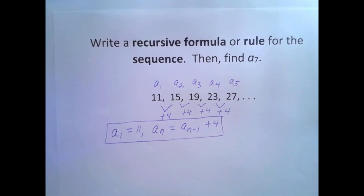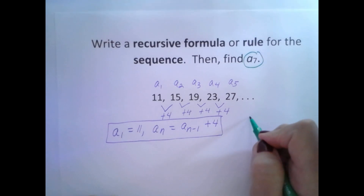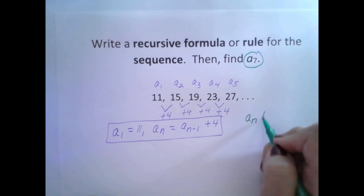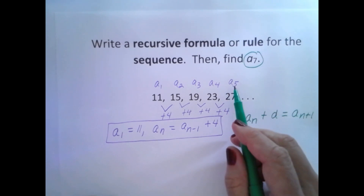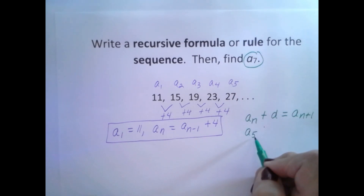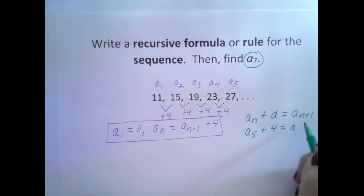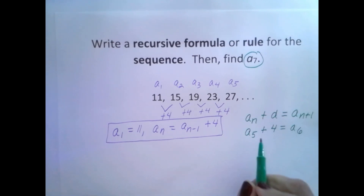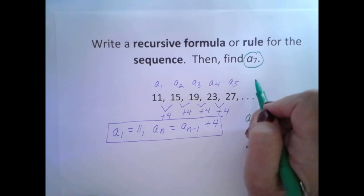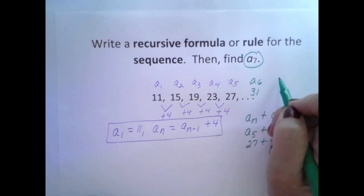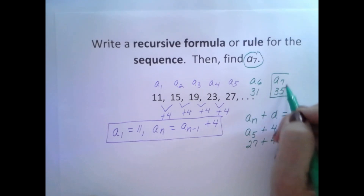Now I'm supposed to find a sub 7. I know that a sub n plus the common difference will give me the next term, a sub n plus 1. So if I'm looking at a sub 5 as being a sub n, a sub 5 plus my common difference of 4 will give me a sub 6. a sub 5 is 27, plus 4 gives me 31. So a sub 6 is 31. Then a sub 7, I will add 4 to that and get 35. So a sub 7 is 35.